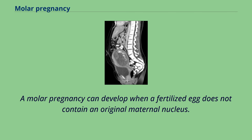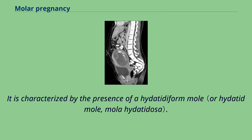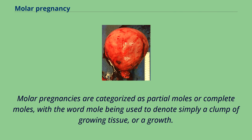A molar pregnancy can develop when a fertilized egg does not contain an original maternal nucleus. The products of conception may or may not contain fetal tissue. It is characterized by the presence of a hydatidiform mole. Molar pregnancies are categorized as partial moles or complete moles, with the word mole being used to denote simply a clump of growing tissue, or a growth.